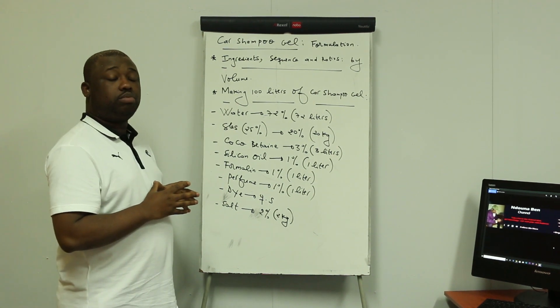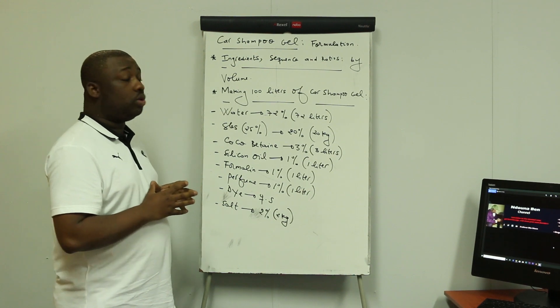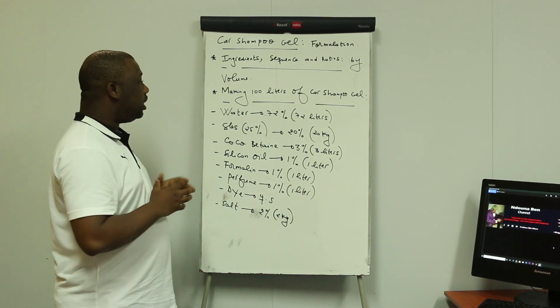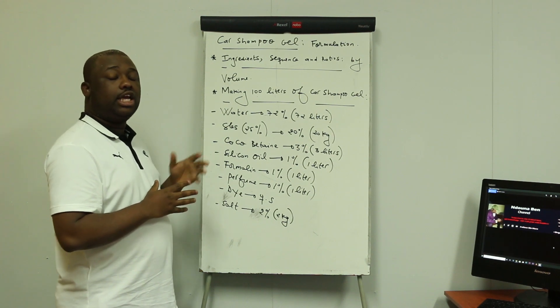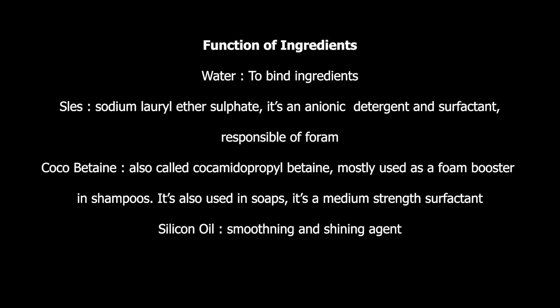Before going to the ratios, I'll give you the function of each and every ingredient in the mixture. The first ingredient is water — its function is to bind ingredients; it's a solvent. The next ingredient is SLES, which stands for Sodium Lauryl Ether Sulfate. It's an anionic detergent and surfactant, responsible for foam. The next ingredient is cocoa betaine, also called cocamidopropyl betaine, mostly used as a foam booster in shampoos.